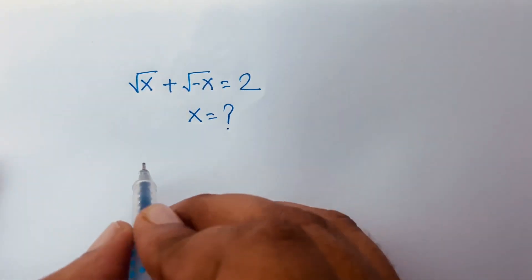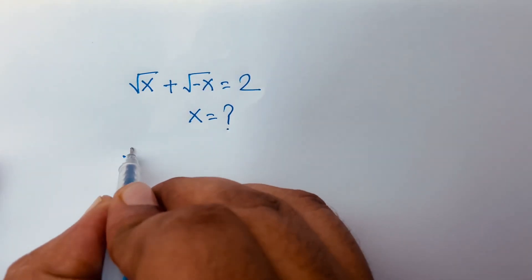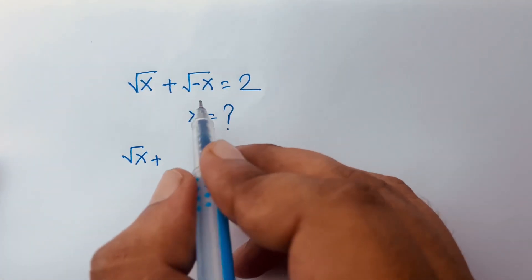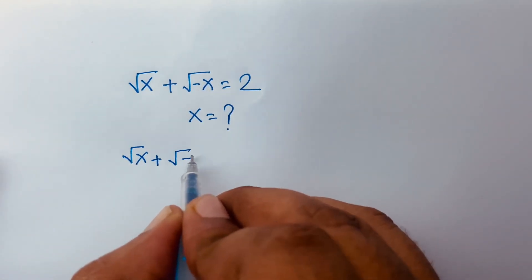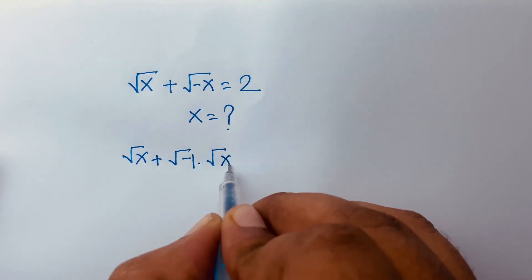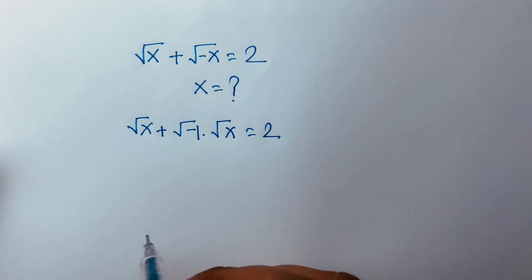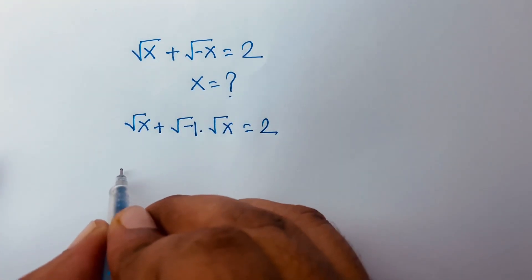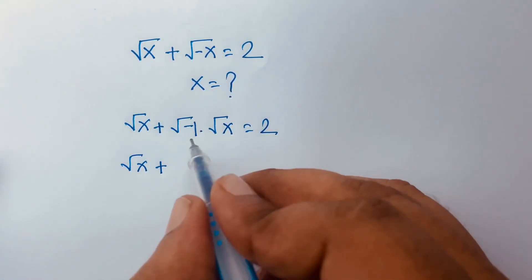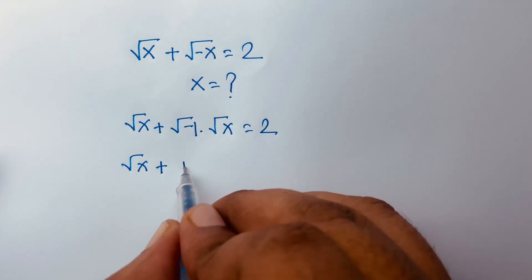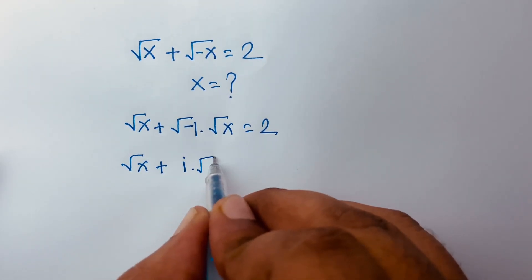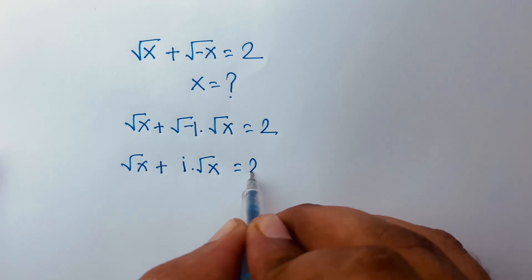First of all, square root of minus x can be written as square root of minus 1 times square root of x, which is equal to i times square root of x. So the equation becomes: square root of x plus i times square root of x is equal to 2.